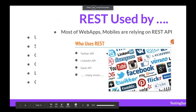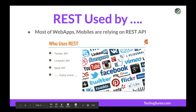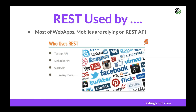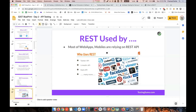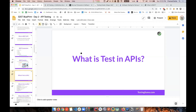REST is used by most web apps you see today — Twitter API, LinkedIn API, Slack API, Foursquare, YouTube, Facebook, and Zoom. Facebook also uses GraphQL for some parts, which is a step ahead of REST API, allowing on-demand client queries. But right now, most APIs you'll work with are REST-based.